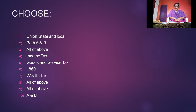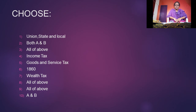Income tax was introduced in India for the first time in the year 1816. Wealth tax is charged on the benefits derived from property ownership. Causes of black money include shortage of goods, smuggling and high tax rate. Tax evasion is the illegal evasion of taxes — all of the above. Payments are fees, fines, penalties and forfeitures.